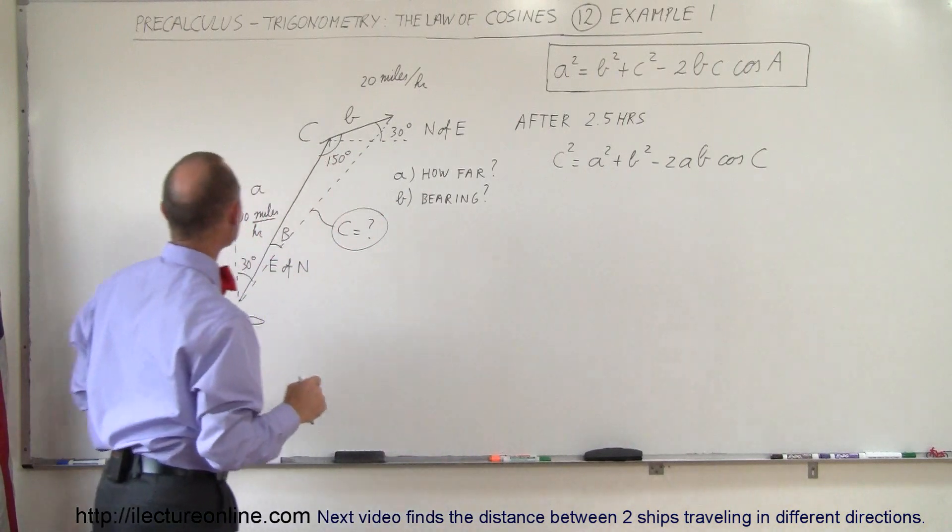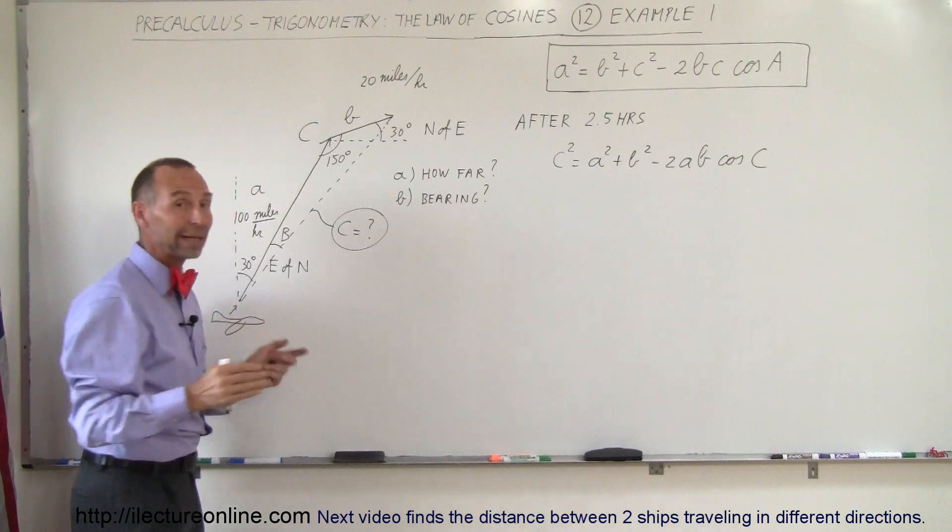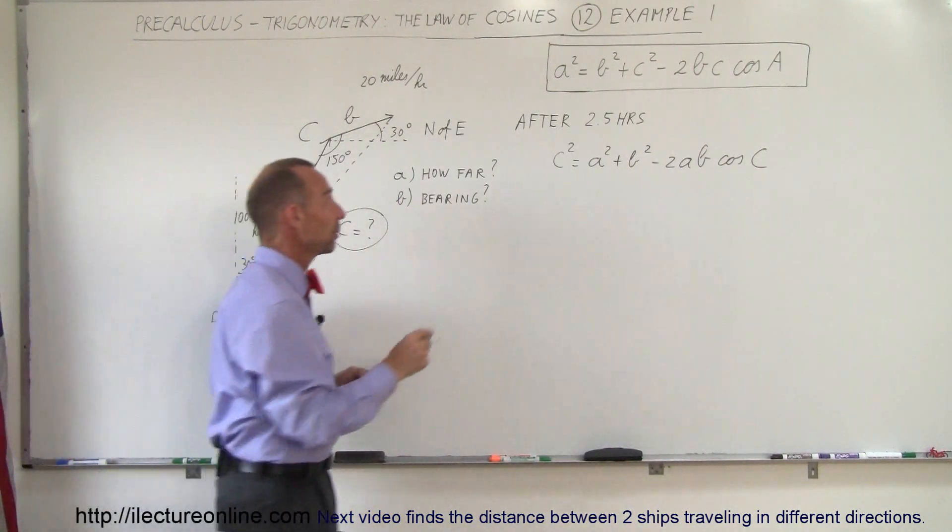Do we know A and B? Yes, A is 100, B is 20, so we can find C because we know the angle directly across from C. So let's plug in the numbers and see what we get.